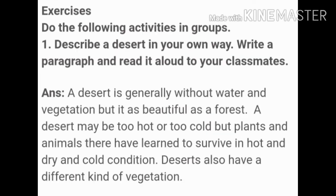Now describe a desert in your own way — write a paragraph and read it aloud. Answer: a desert is generally without water and vegetation, but it is as beautiful as a forest. A desert may be too hot or too cold, but plants and animals have learned to survive in hot, dry and cold conditions. Deserts also have a different kind of vegetation.